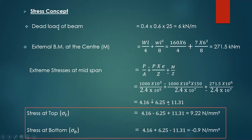The external bending moment is due to the point load: WL/4, and due to the UDL: WL²/8. Point load is 160 kN. So bending moment = 160 × 6 / 4 plus the dead load 7 × 6² / 8. That gives a total bending moment of 271.5 kN·m.